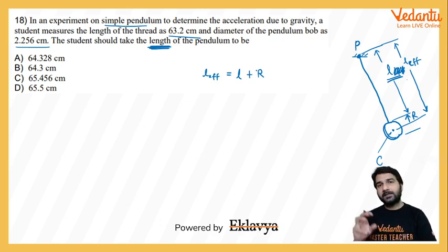And that is equal to length of thread plus the radius of the bob. If suppose the bob is some other body, then in that case you would put the distance from the thread to the center of mass location in place of this r. In this case it's very convenient for us to assume radius r as that distance.